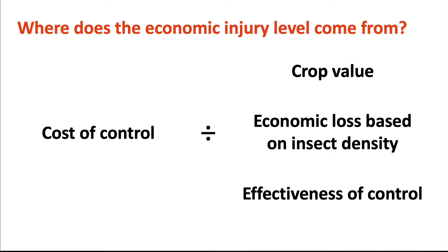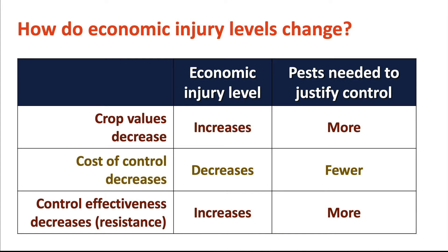To determine the economic injury level, we make a comparison between the cost of control and the product of crop value, economic losses based on insect density — again, that could be reductions in yield or reductions in quality — and the effectiveness of that control. These levels don't stay static; they change over time based on changes in those factors.